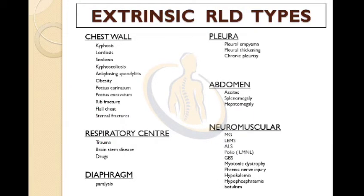After clearing the two basic types of RLD, we will look into extrinsic RLD types. It includes, first, chest wall deformity: kyphosis, lordosis, scoliosis, kyphoscoliosis, ankylosing spondylitis, obesity, pectus carinatum, pectus excavatum, rib fractures, flail chest, and sternal fractures.